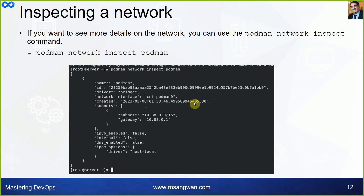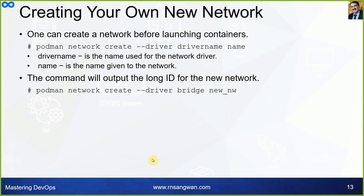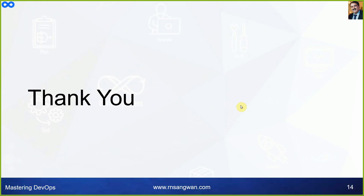For more details on a network, use `podman network inspect podman`. This shows the name, ID, driver, network interfaces, creation date, subnets, whether IPv6 is enabled, internal IP settings, DNS enabled status, and IPAM options. This is important for troubleshooting. You can also create your own network before launching containers: `podman network create --driver bridge new-network`. You can then use this custom network for your containers. That covers the container networking part — thank you.